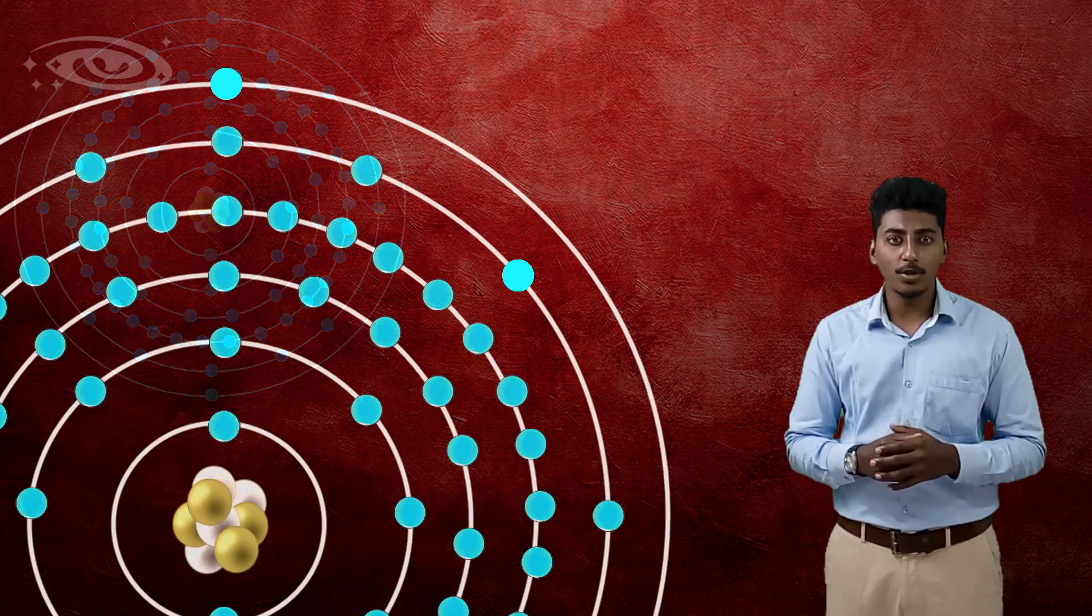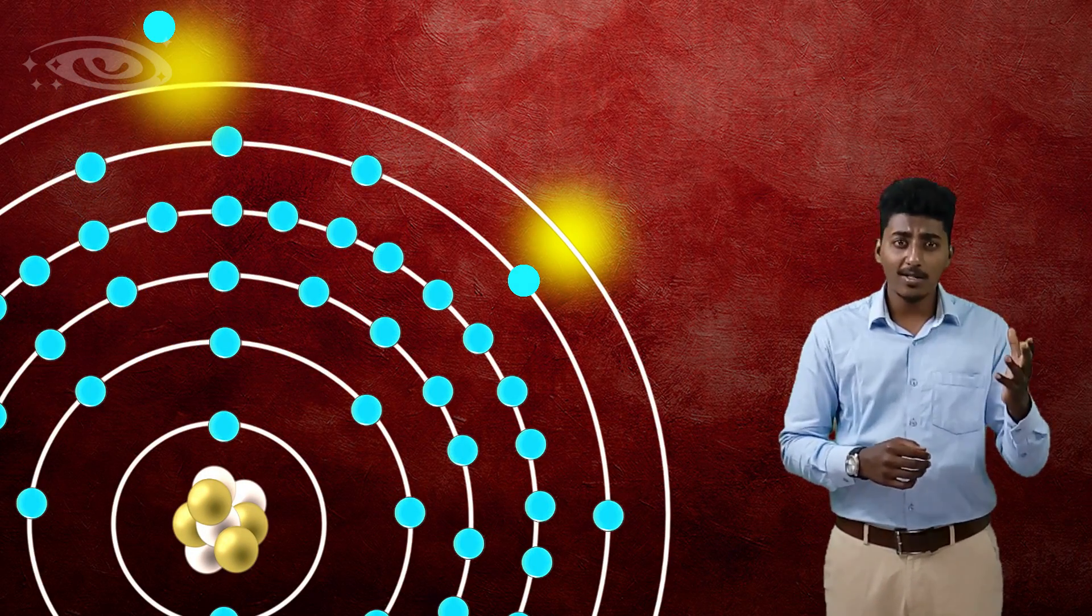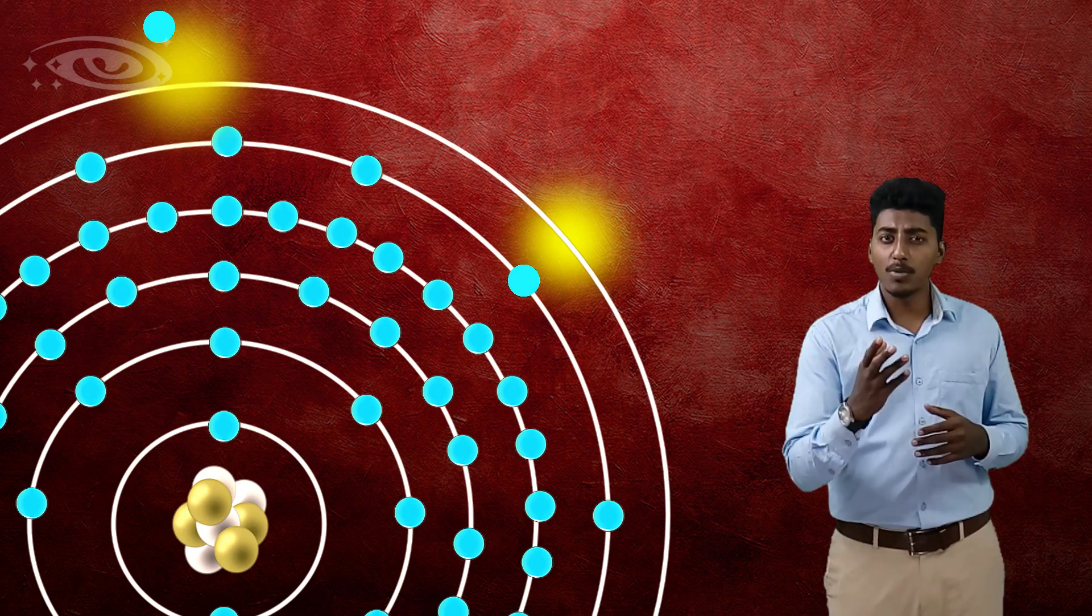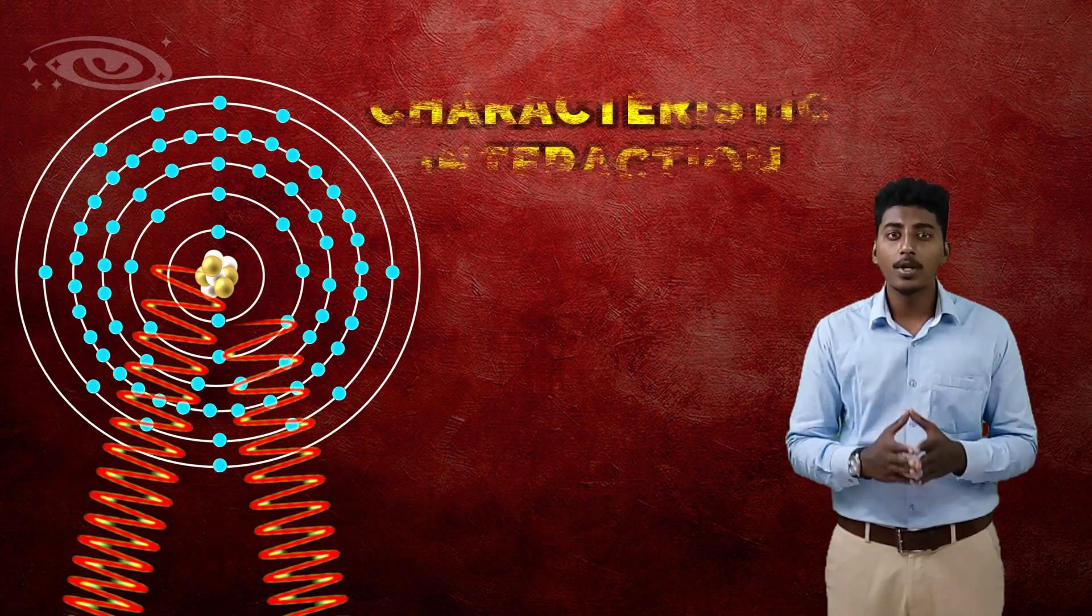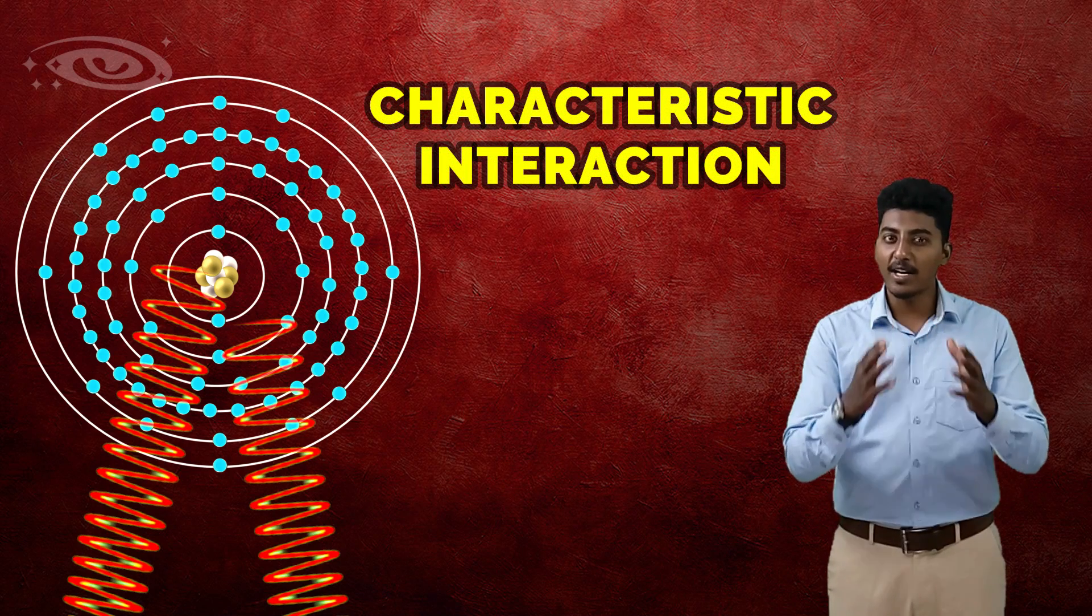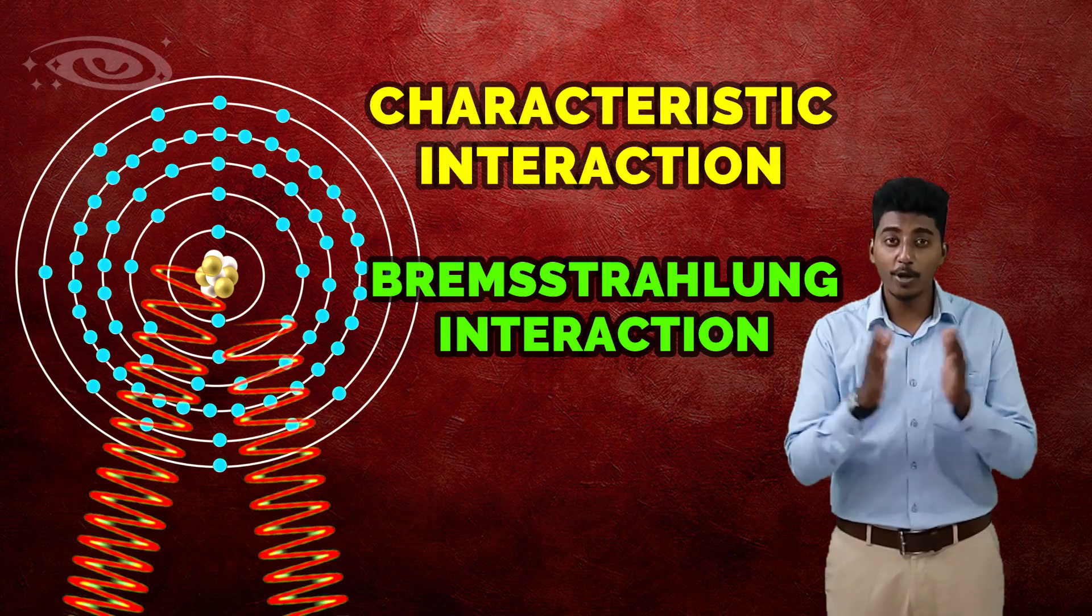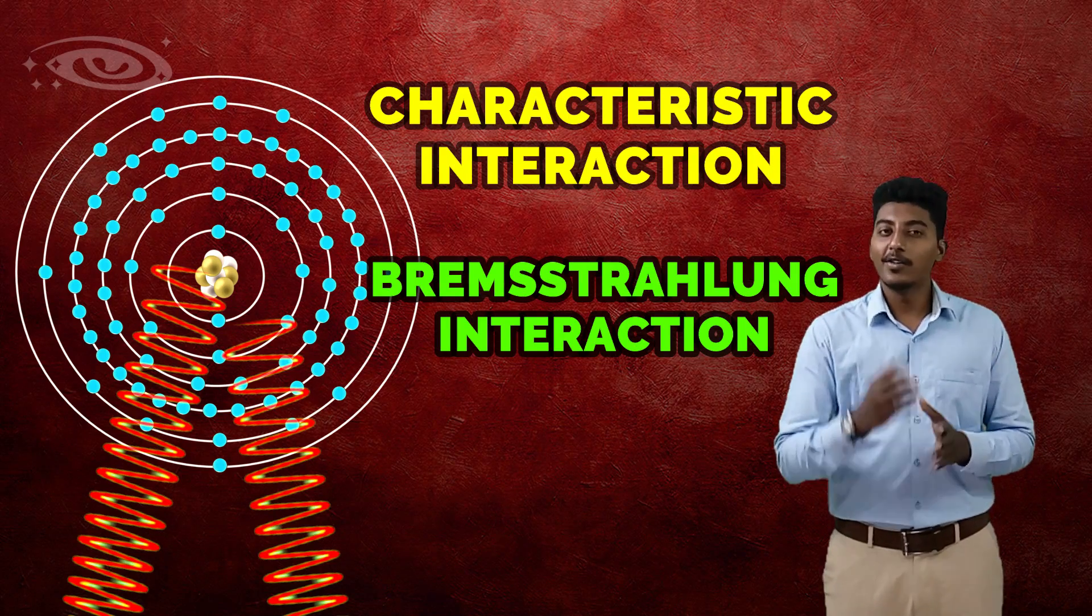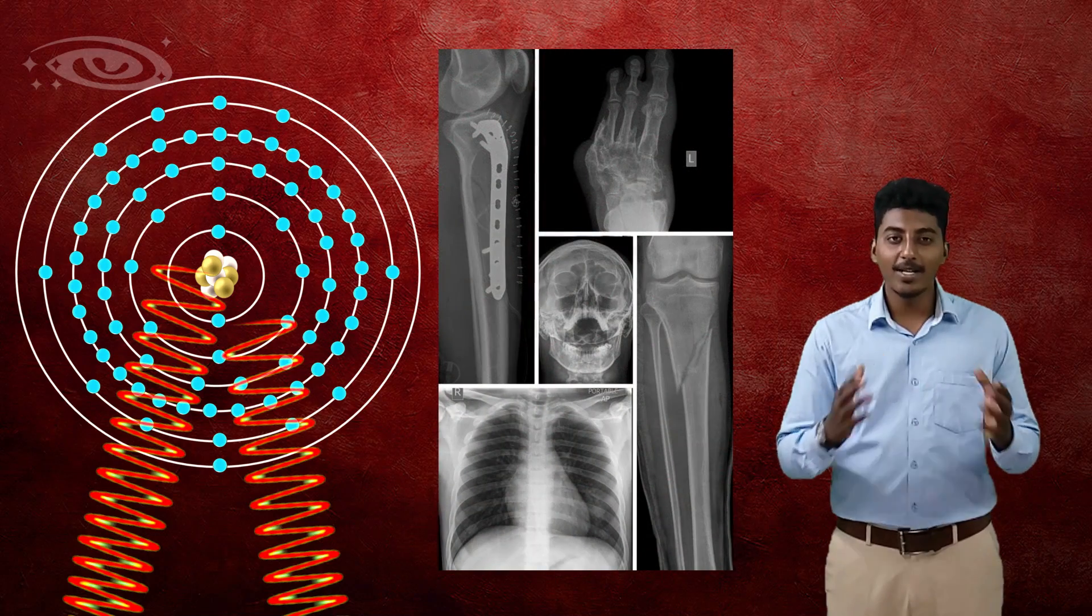During interaction, there will be production of enormous amount of heat and some amount of x-ray photons. The enormous heat is due to excitation and ionization of electrons in various shells in the atom of the target. Some x-ray photons are due to characteristic interactions and bremsstrahlung interaction. Both interactions play a major role to produce x-rays, and we use these x-rays to take radiographic images in the medical field.